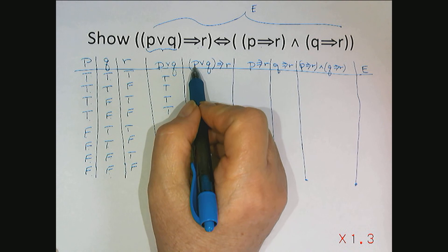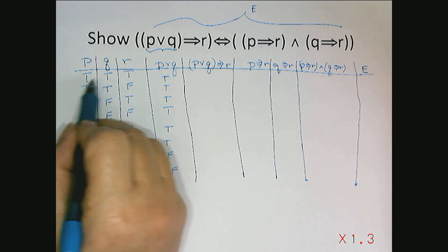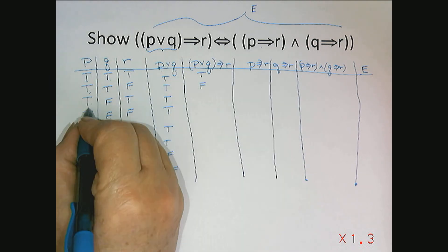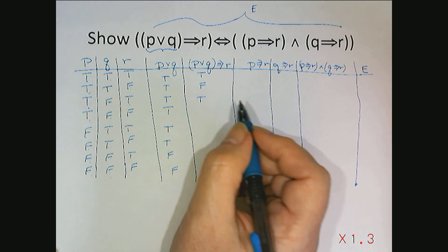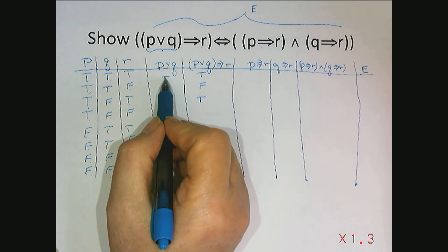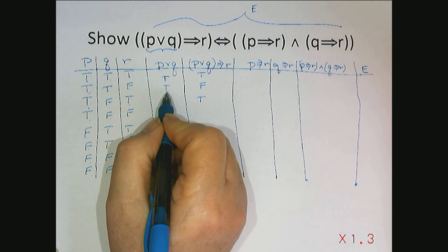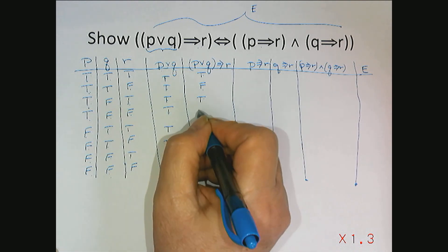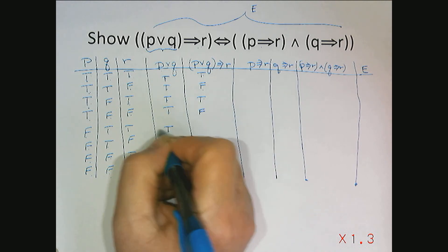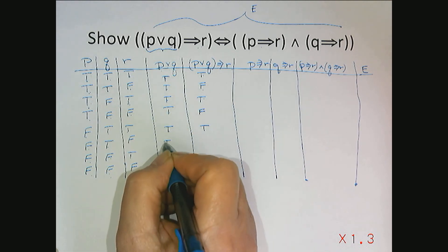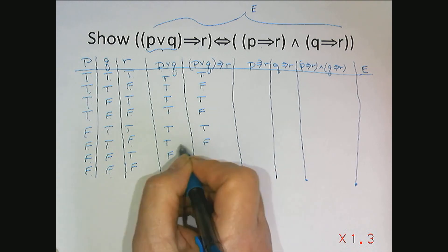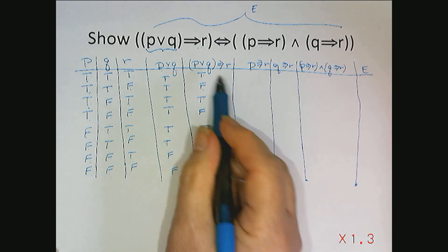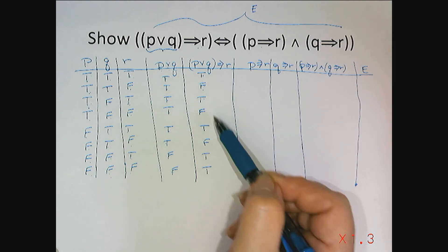Now let's look at p or q implying r: true implying true is true; true implying false is false; true implying true is true; true implying false is false; true implying true is true; true implying false is false; and false implying anything is always true. So I end up with a column that looks like true, false, true, false, true, false, true, true.